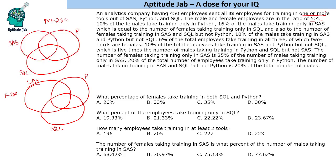Now it's about reading the statements and filling in the data. 10 percent of the females take training only in Python, so only Python for females is 20. 16 percent of the males take training only in SAS, so 16 percent of 250 is 40 — only SAS for males is 40. That equals the number of females taking training only in SQL, so only SQL for females is 40. It also equals females taking SAS and SQL but not Python, so that region is also 40. 10 percent of males take SAS and Python but not SQL, which is 25 males.